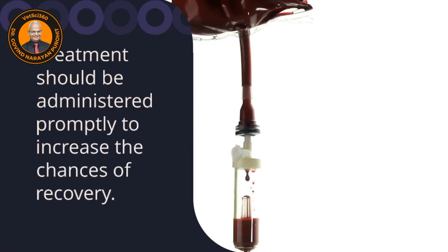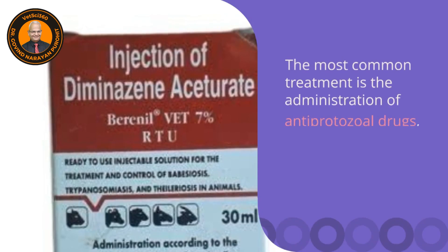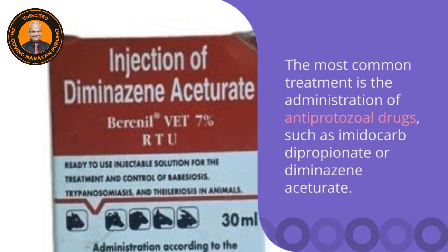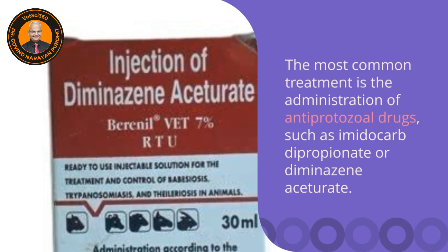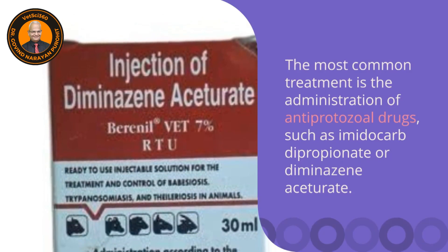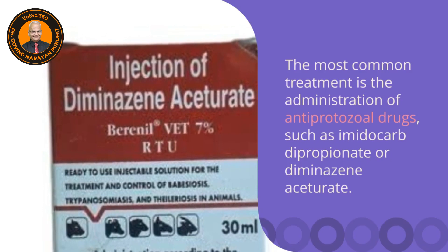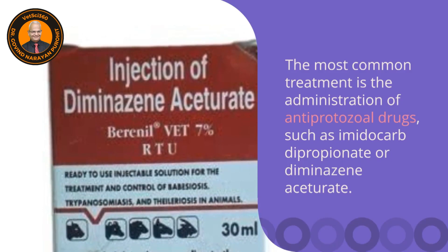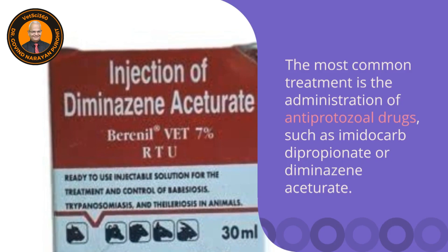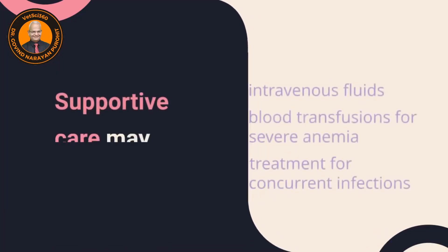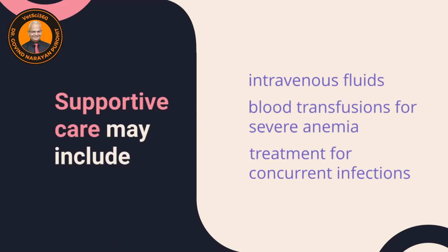Treatment should be instituted as early as possible, because otherwise there will be plenty of damage and recovery would be difficult. As soon as one notices signs, confirm the diagnosis and institute treatment. The most common treatment is the administration of anti-protozoal drugs such as imidocarb dipropionate or diminazene aceturate — Berenil RTU — which is most commonly used in veterinary practice, and one should immediately administer it.